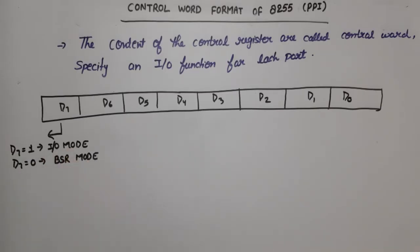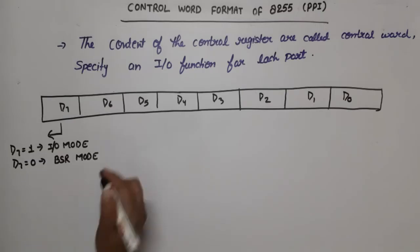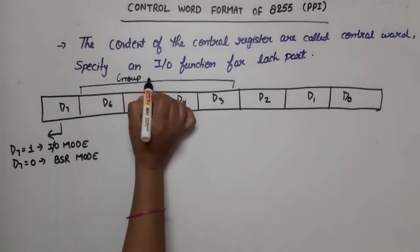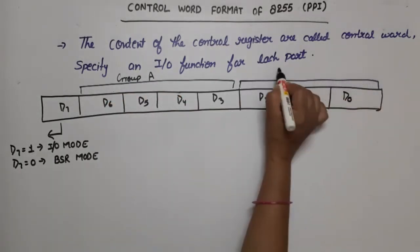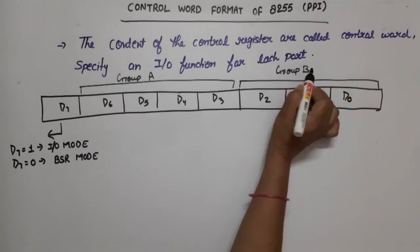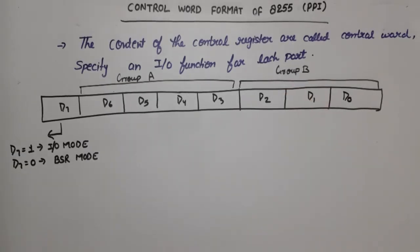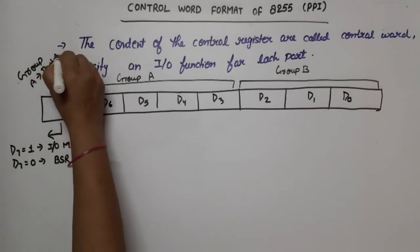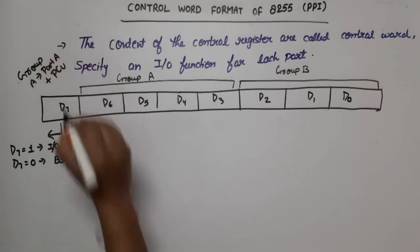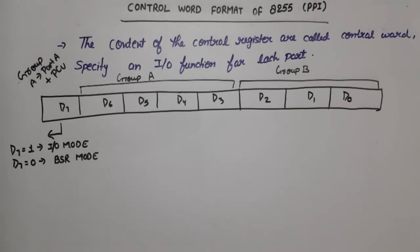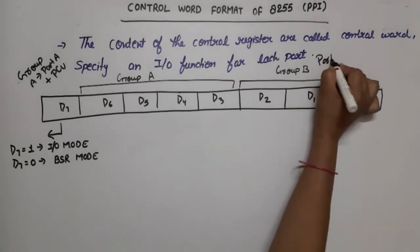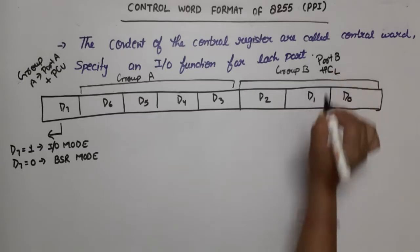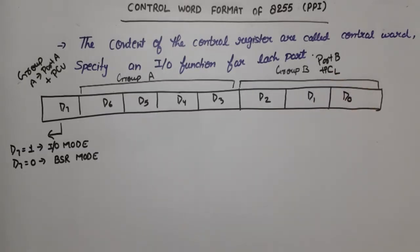In this video, we will discuss the input/output mode, and in the next video, we will discuss the BSR mode. Group A is the combination of Port A plus Port C upper portion. Group B means Port B plus Port C lower. We will start our discussion with Group B.